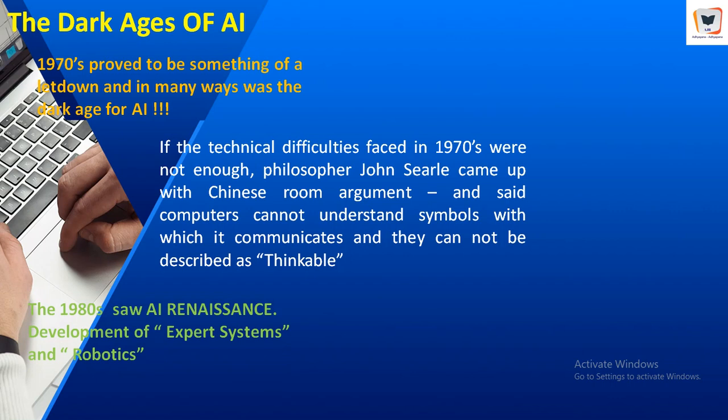As if the technical difficulties of the 1970s were not enough, the field also became an acceptable topic of interest to philosophers. A philosopher by name John Searle came up with his Chinese Room argument to show that a computer cannot be said to understand the symbols with which it communicates — that is, zeros and ones. He further argued that because of this, the machine cannot necessarily be described as a thinking machine; computers cannot simply think.